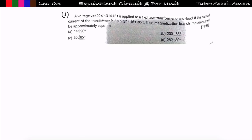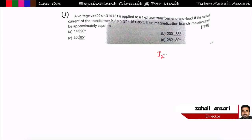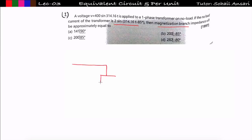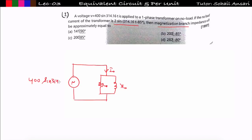The first problem: a voltage V = 400 sin(ωt) is applied to a single phase transformer on no load, meaning I₂ = 0. The no load current of the transformer is given as I₀ = 2 sin(314.6t − 85°). We have to find the magnetization branch impedance.